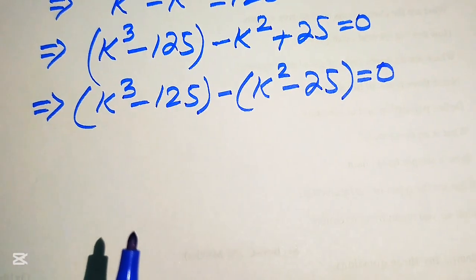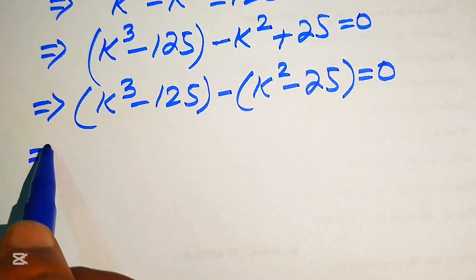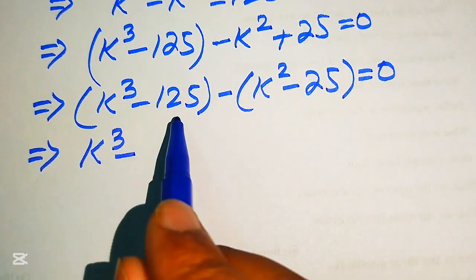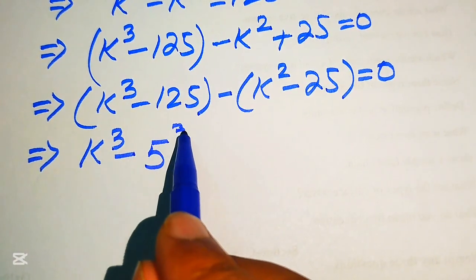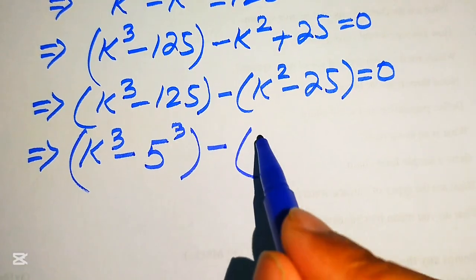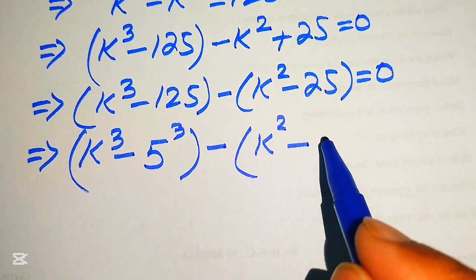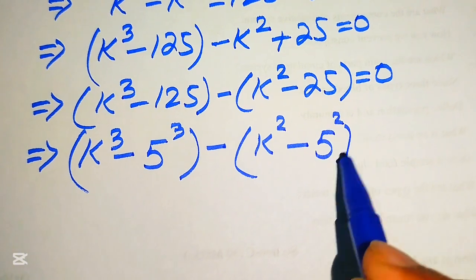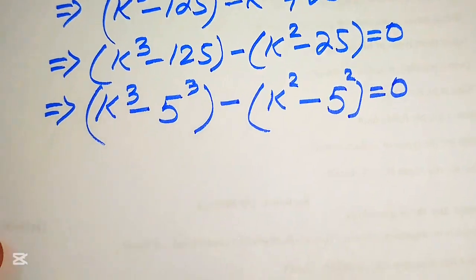We rewrite this equation: k cubed minus 5 cubed, minus k squared minus 5 squared, equals 0.